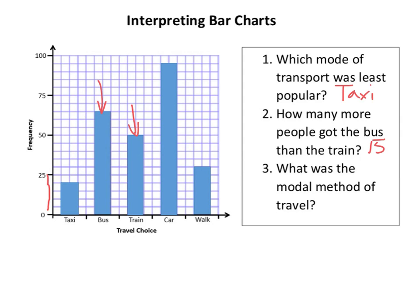What was the modal method of travel? A lot of people say modal — it's not modal, it's modal. We should know that mode is most. So the modal method of transport is the one with the highest bar, which is car. That's in theory the only average you can take from this because they're words — you can't put them in order so you can't do the median, and you can't add them up because they're not numbers. So modal — look out for that.